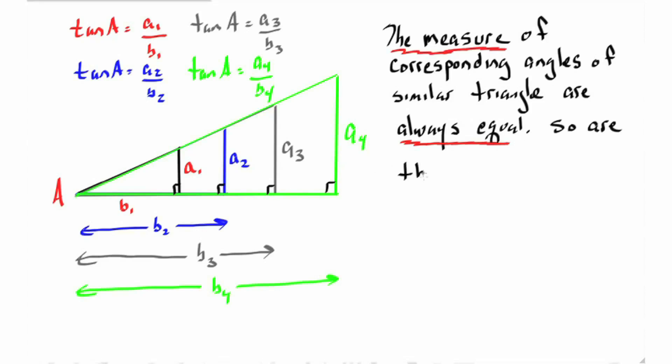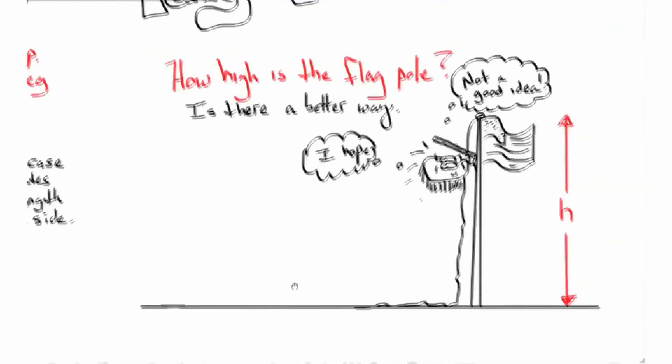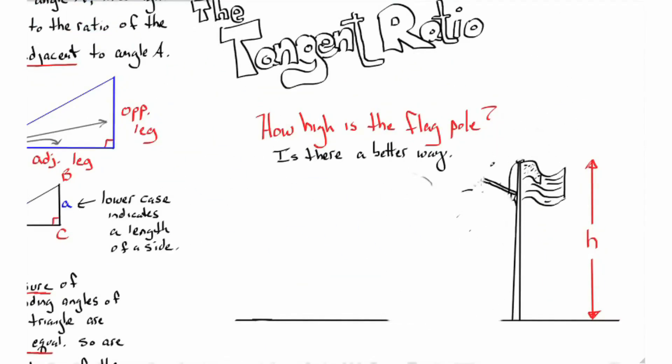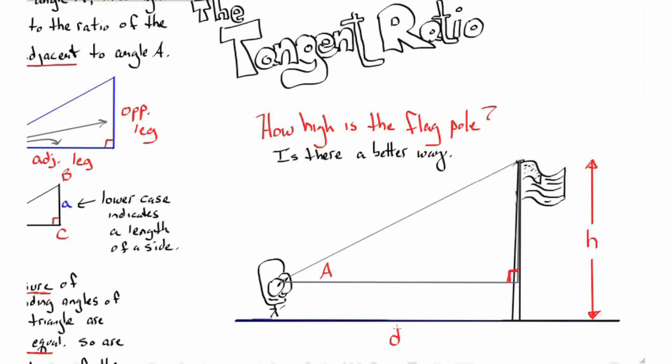So let's get back to our flagpole problem. We're no longer suspended from the top of the flagpole but safely on the ground and we can draw a right triangle here with our angle A being the inclination from our eye to the top of the flagpole.